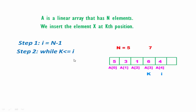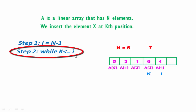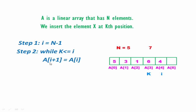Next we check the condition: while k is less than or equal to i. If this condition is true, then we shift the ith element to the i+1th position — that is A[i+1] = A[i]. For this example, A[4] will be shifted to A[5].